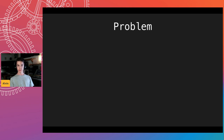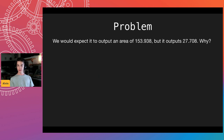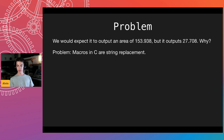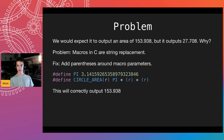This is the first problem. The correct result was 153-something, but it actually outputs 27.708. What's the problem? Well, it's just simple string replacement. So if we look at what it replaces with, it's `pi * radius + 2 * radius + 2`. We can fix this by just adding parentheses around, and this will output the correct thing.